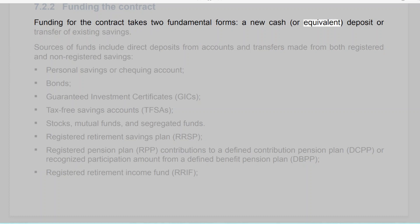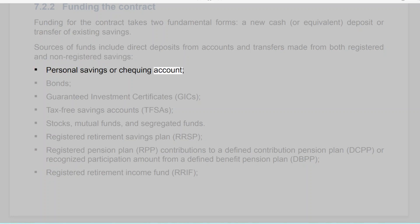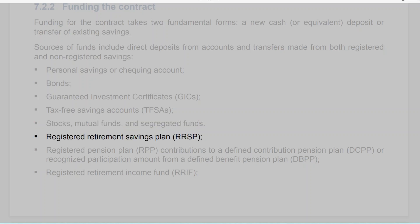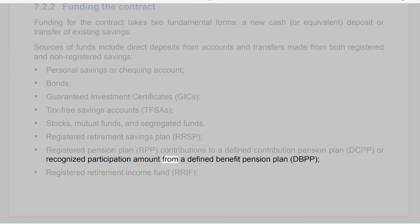Section 7.2.2: Funding the contract. Funding takes two fundamental forms: a new cash or equivalent deposit, or a transfer of existing savings. Sources of funds include direct deposits from accounts and transfers from both registered and non-registered savings, such as personal savings or checking accounts, bonds, guaranteed investment certificates (GICs), tax-free savings accounts (TFSAs), stocks, mutual funds and segregated funds, registered retirement savings plans (RRSPs), and registered pension plan (RPP) contributions.